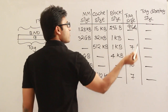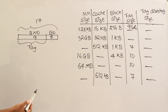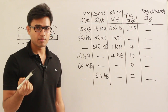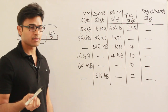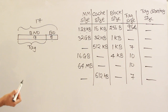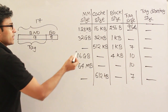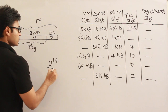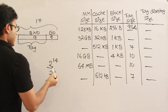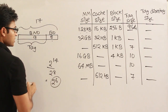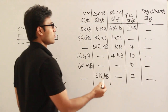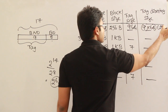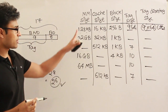The tag directory size depends on the number of lines multiplied by the number of tag bits per line. Cache size is 16KB = 2^14 and block size is 256 = 2^8, so the number of lines is 2^14 / 2^8 = 2^6 = 64 lines. Therefore the tag directory size is 9 × 64 bits.